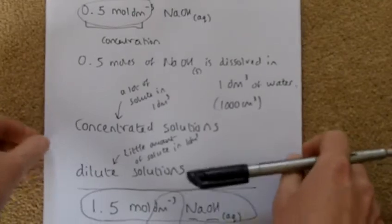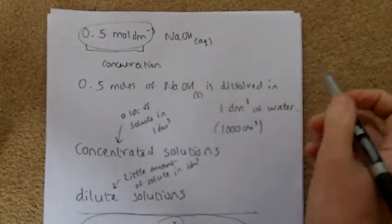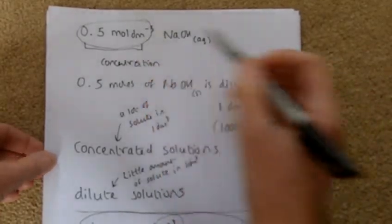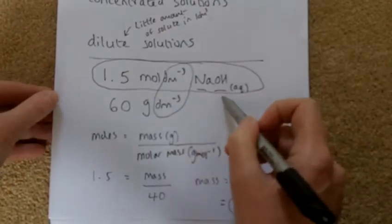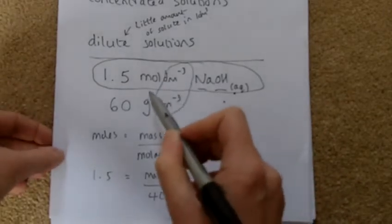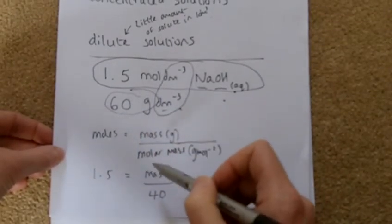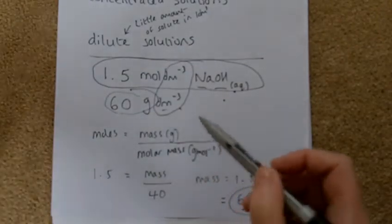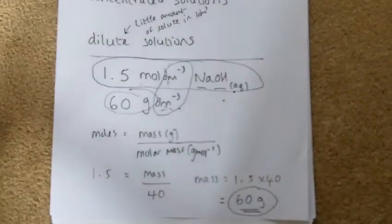The reason we have two ways to express concentration is that when a technician needs to make up a solution, they need to weigh the sodium hydroxide and then dissolve it in water — so expressing concentration in grams per dm³ is practically useful. Those are two ways to express concentration.